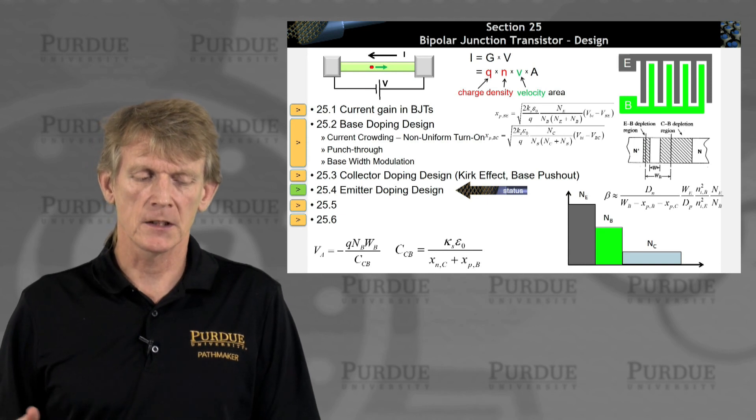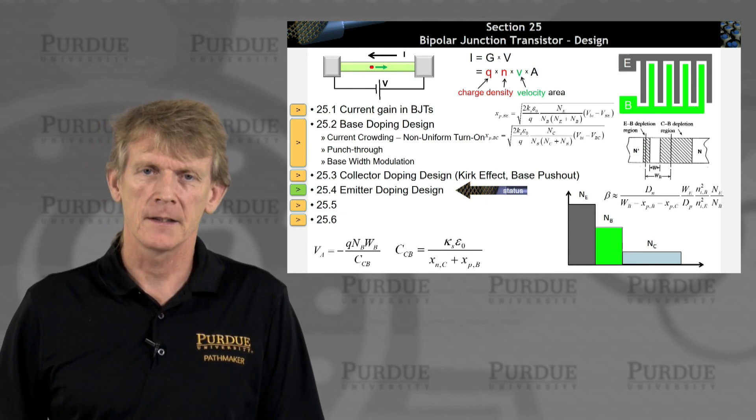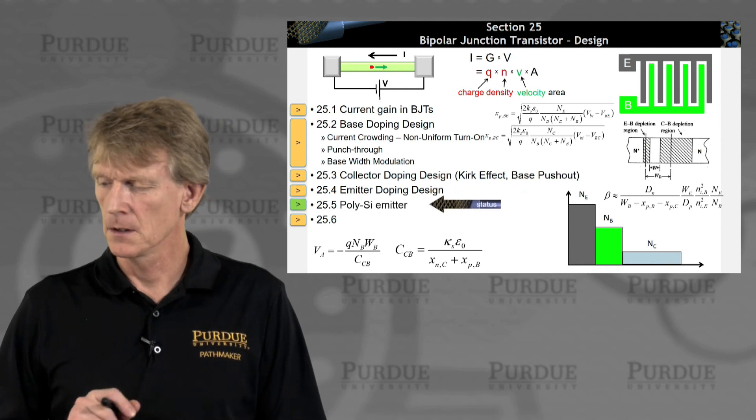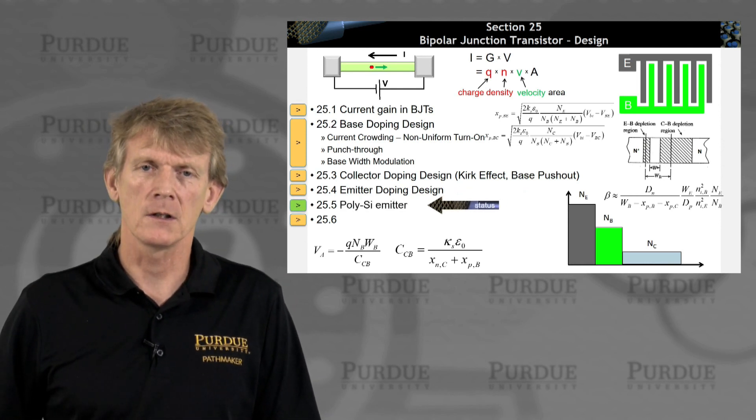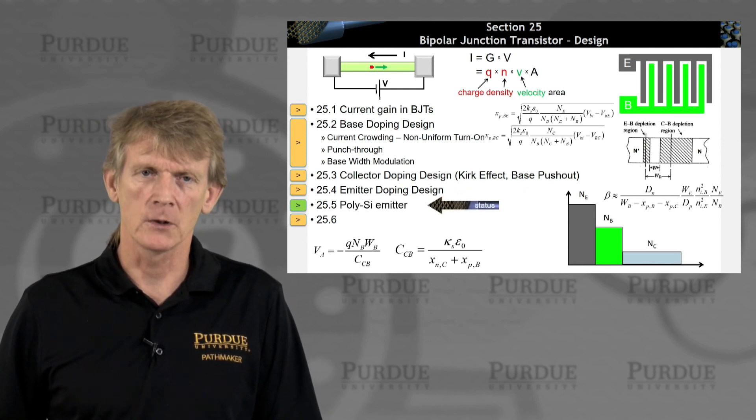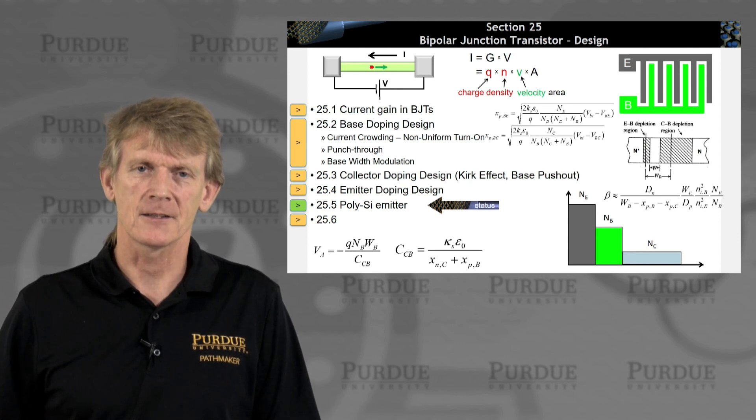So those are the options we had with the doping, and then comes along something really nice. It's called a polysilicon emitter, and we'll discuss that in the next section. I'll see you then.